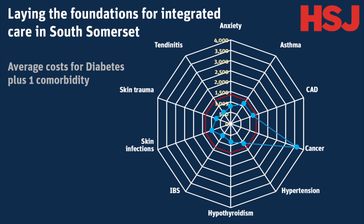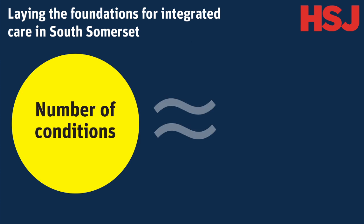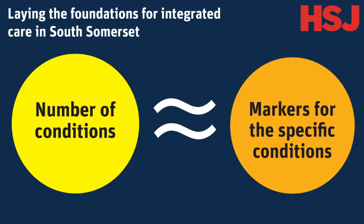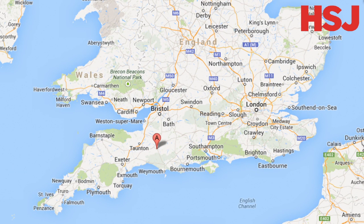If we look at the data in the same way for people with diabetes and progressively more comorbidities, the correspondence between the blue and the red lines becomes even closer. We can see similar patterns for people who don't have diabetes but have combinations of other chronic conditions, such as coronary artery disease, cancer, stroke or dementia. This suggests that the number of conditions a person has is almost as good at explaining costs as markers for the specific conditions each person has. This means we can use the number rather than the type of chronic condition as predictors of future costs, making it simpler to calculate integrated health and social care budgets, which are being developed to support improvements in the integration of care for the South Somerset population.